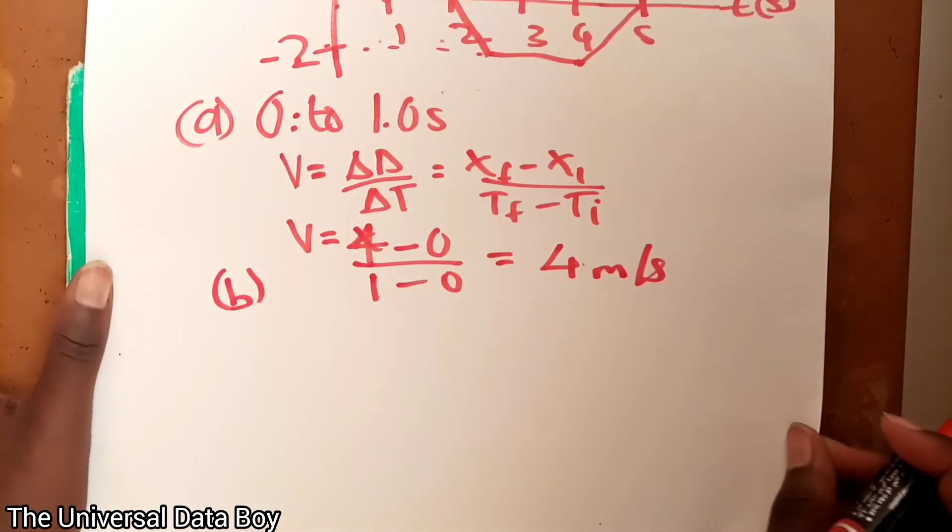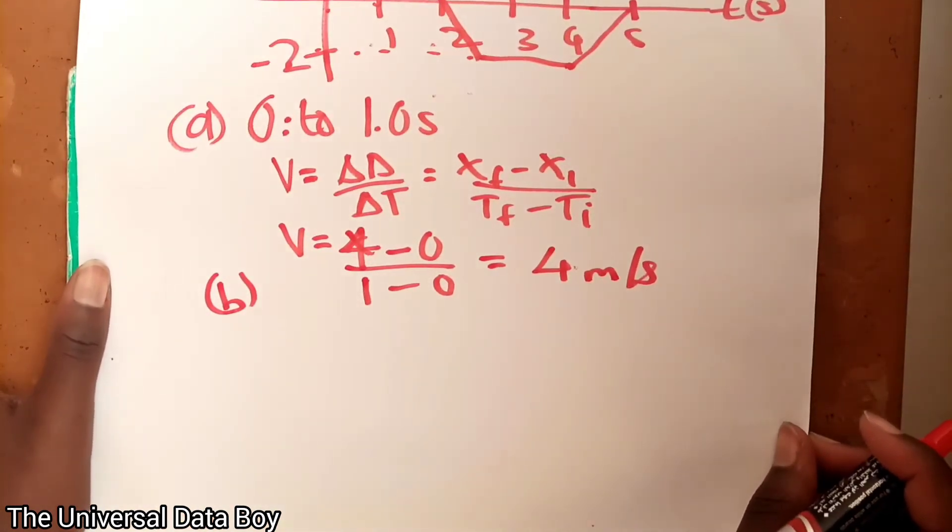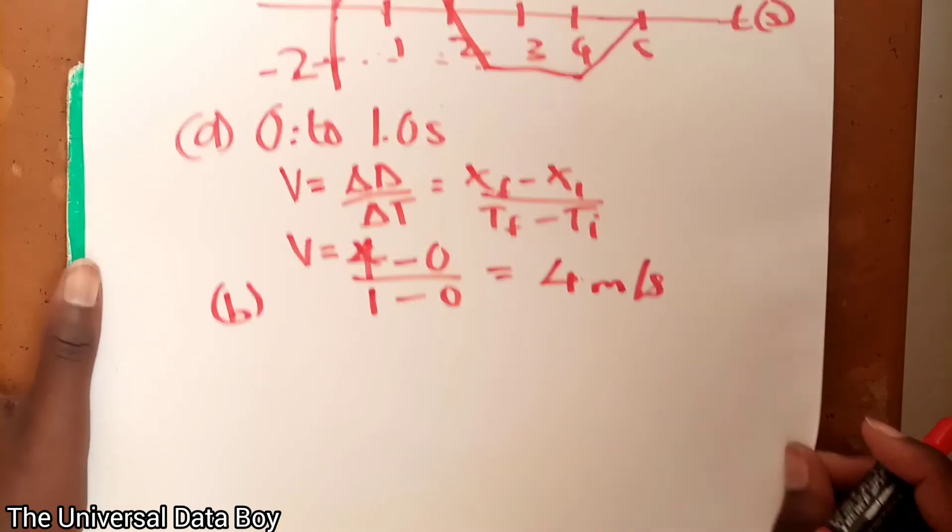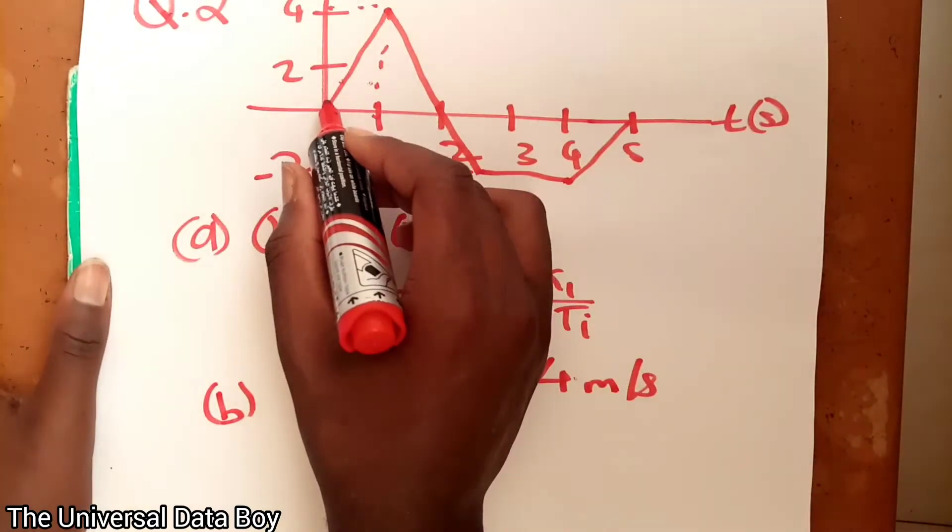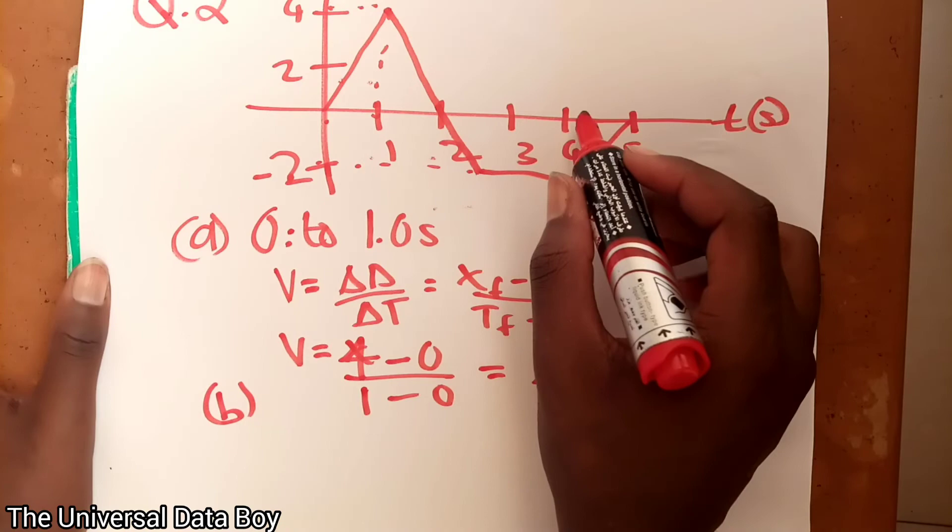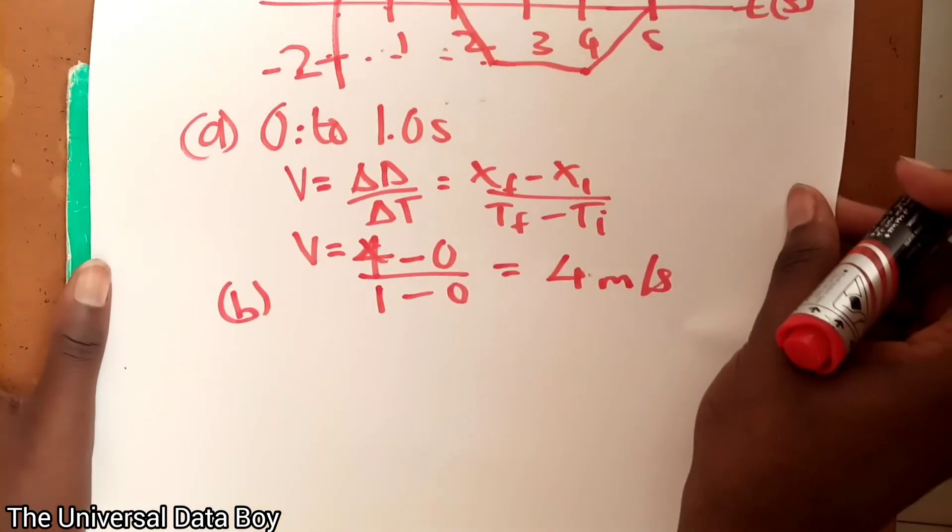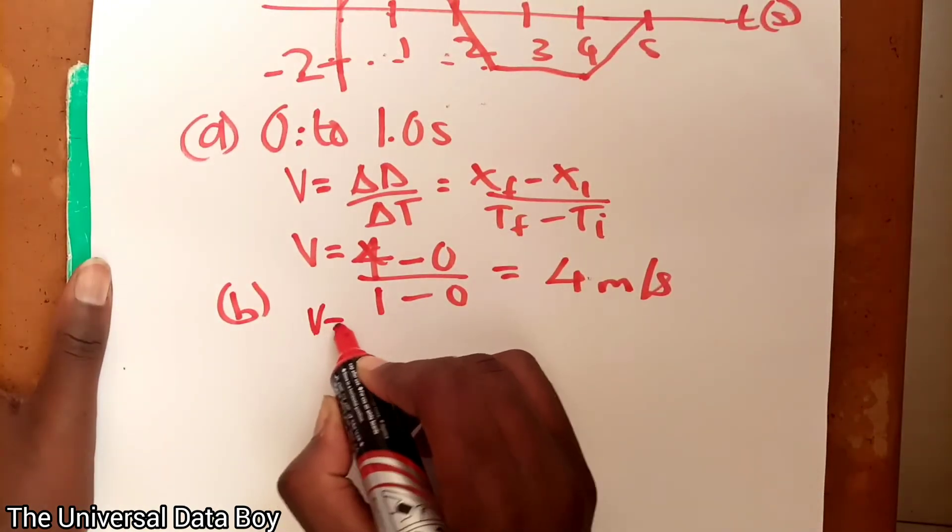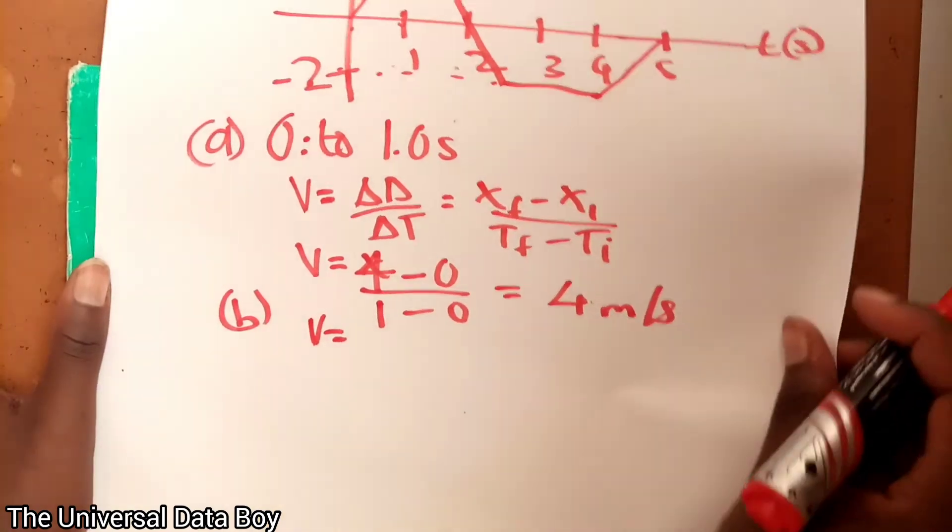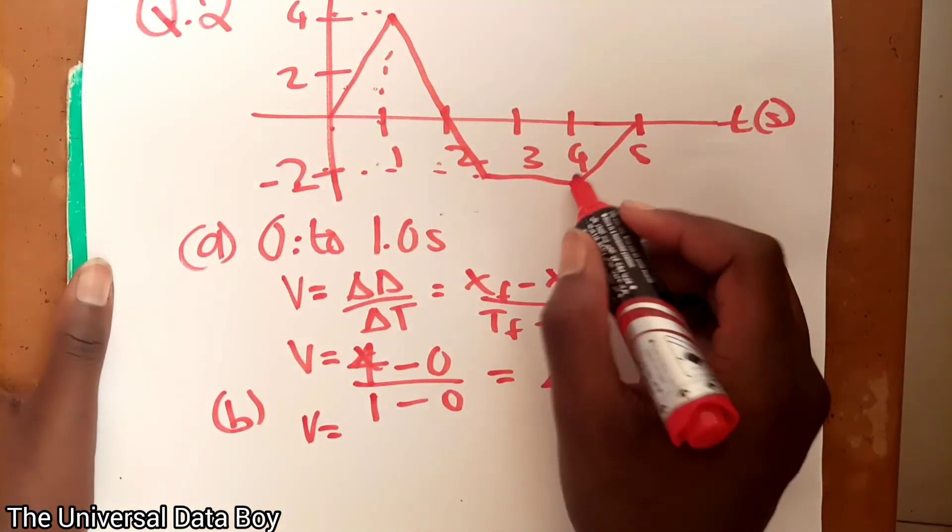The b part of the question. It says from 0 to 4 seconds. So from 0 to 4 seconds, so now here we are going to look at the velocity is equal to the final distance. The final distance here is negative 2